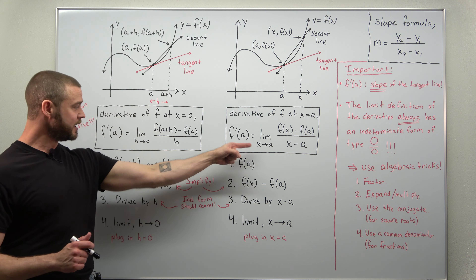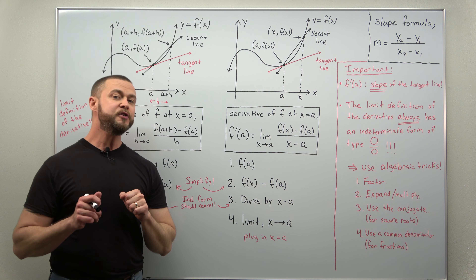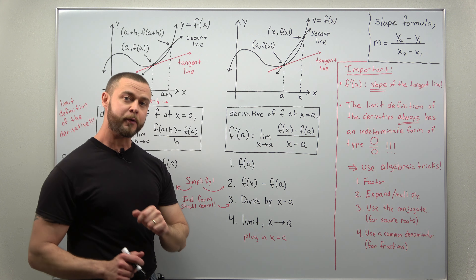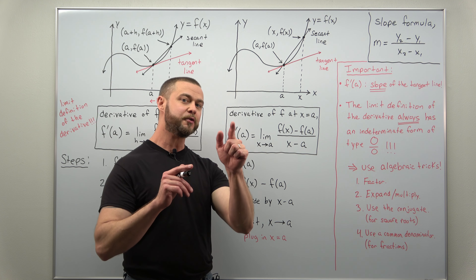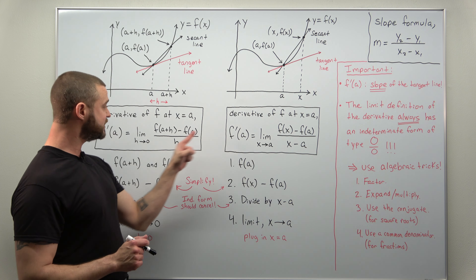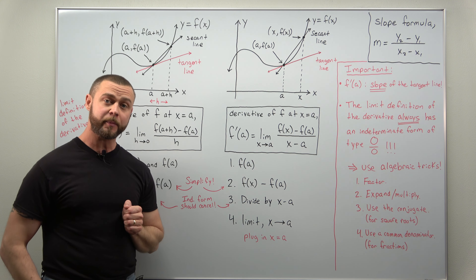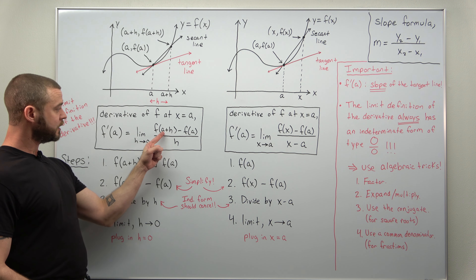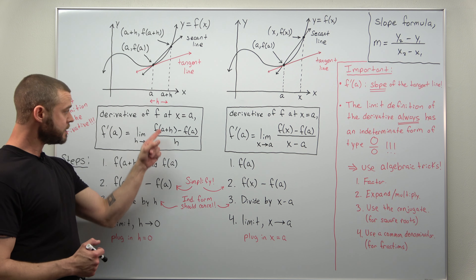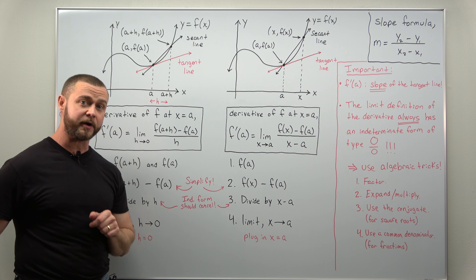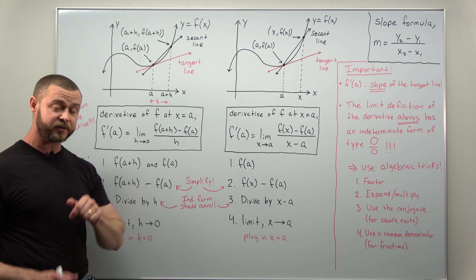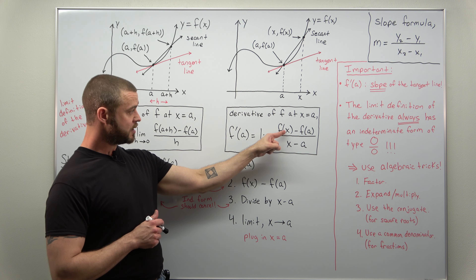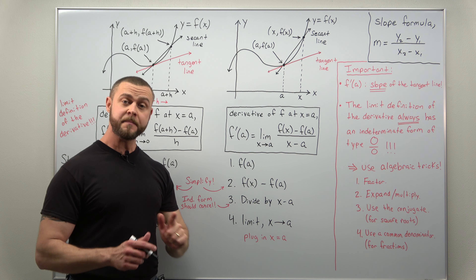Since these come down to calculating limits, right before this in your Calc 1 course you were introduced to limits that gave indeterminate forms — specifically an indeterminate form of type zero over zero. Both of these definitions always give an indeterminate form of type zero over zero. Plug in h equals zero: you'll get zero in the denominator and f of a plus zero minus f of a, which is zero in the numerator. Similarly, plugging in x equals a gives zero in both the denominator and the numerator.